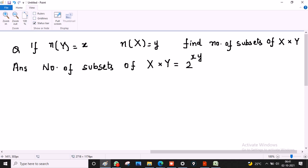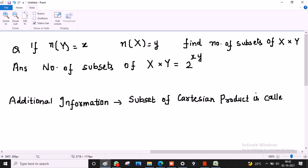Now, additional information. Subset of Cartesian product is called a relation. So chapter name is relation and function. What is a relation? It is a subset of Cartesian product.